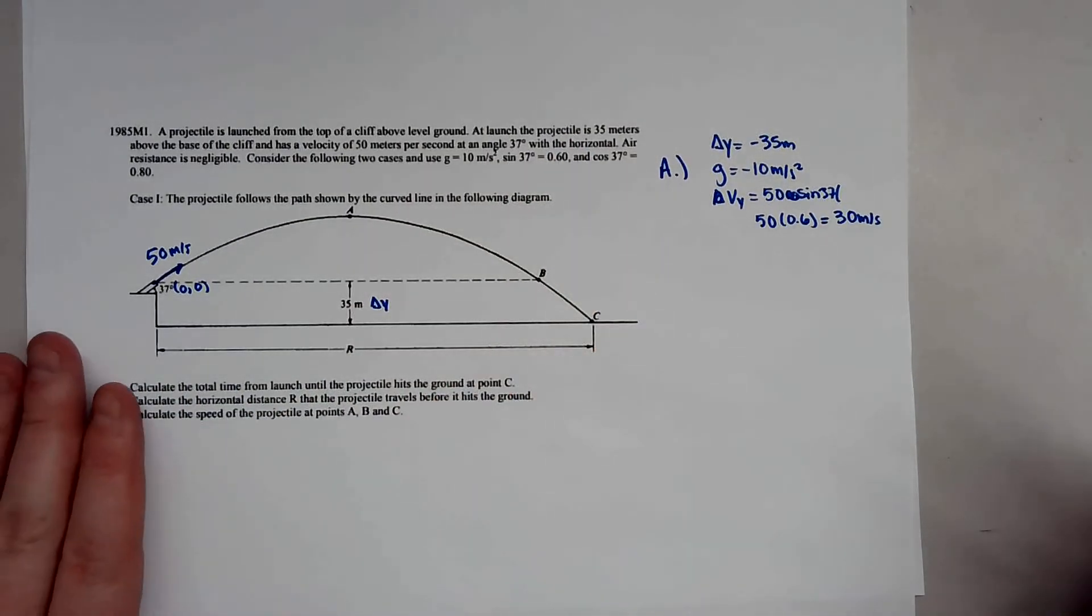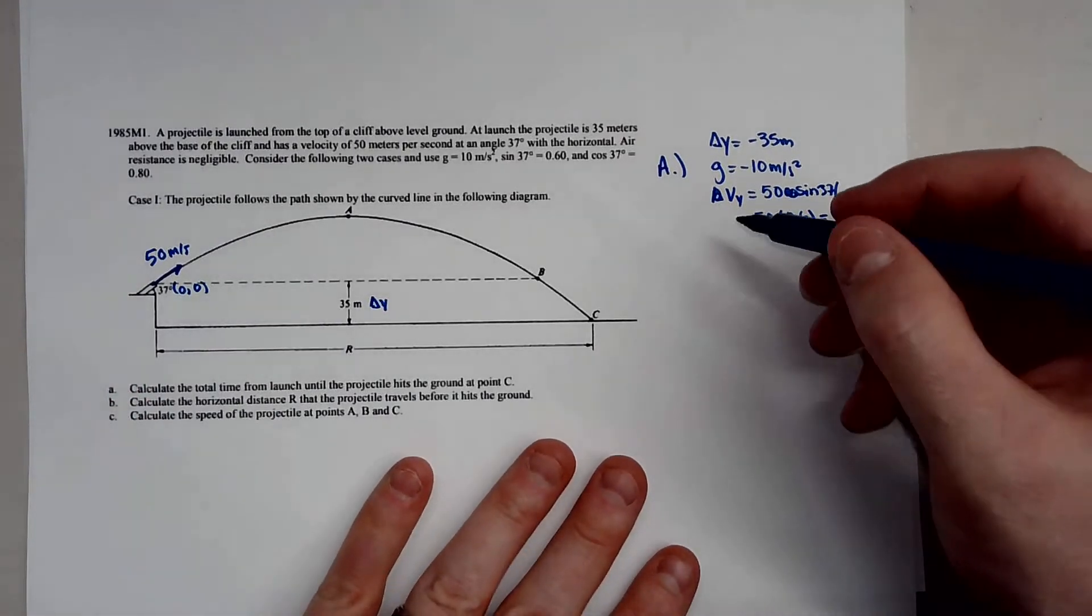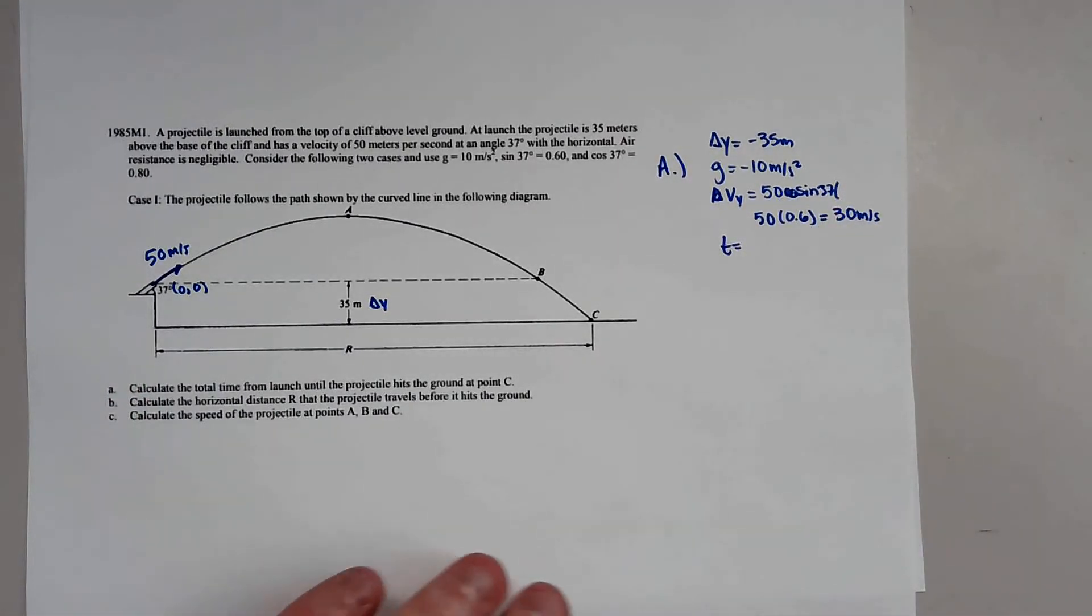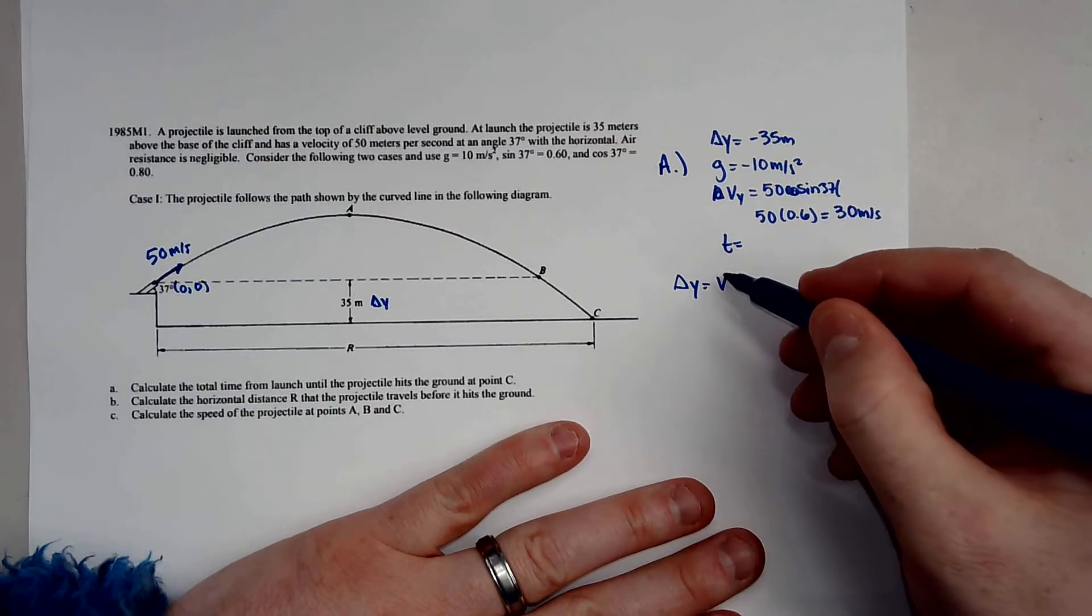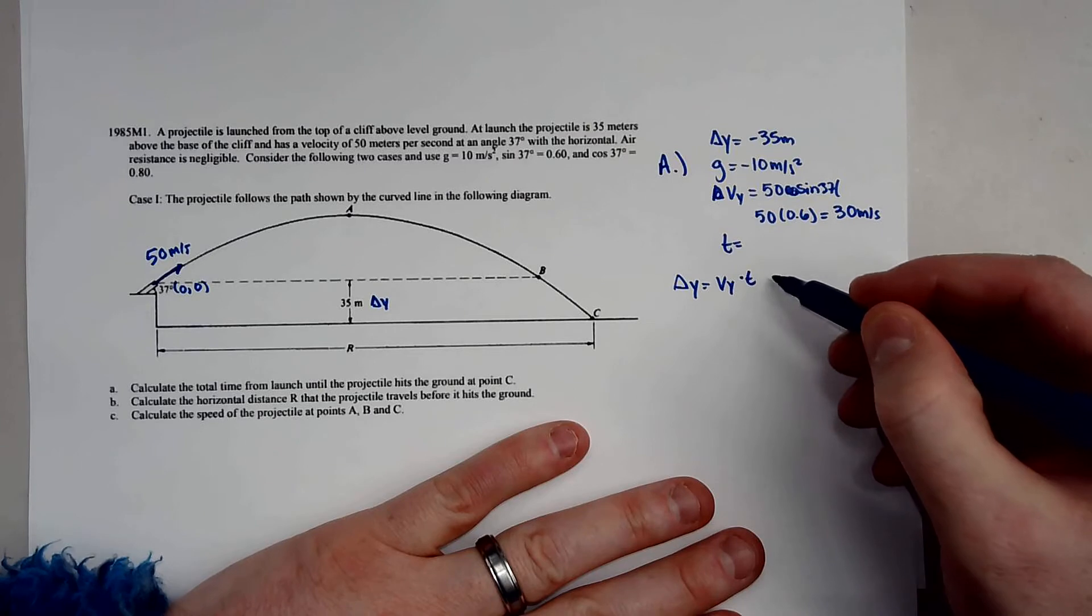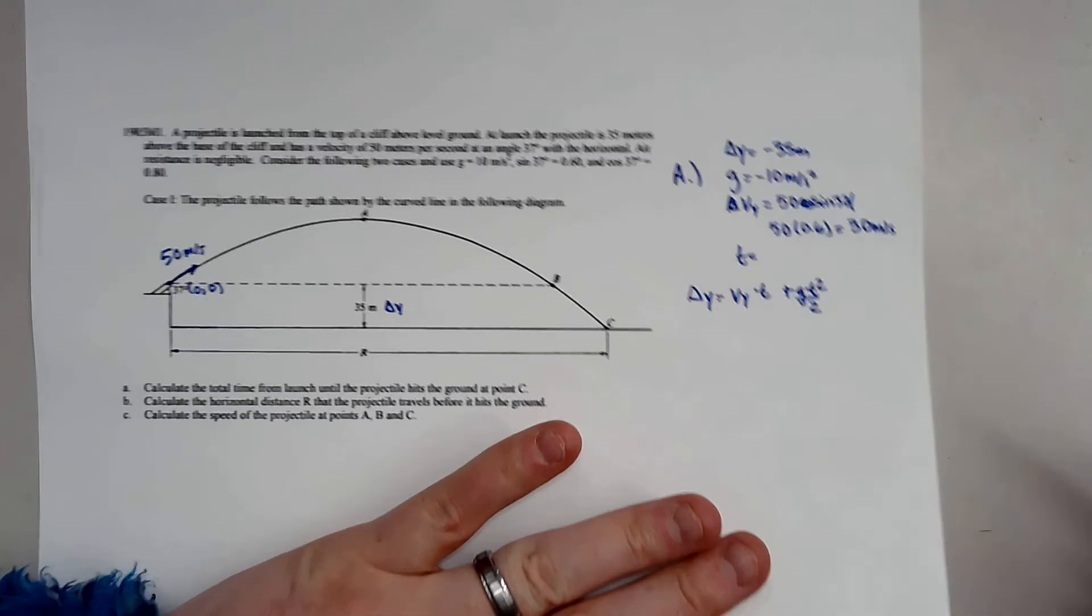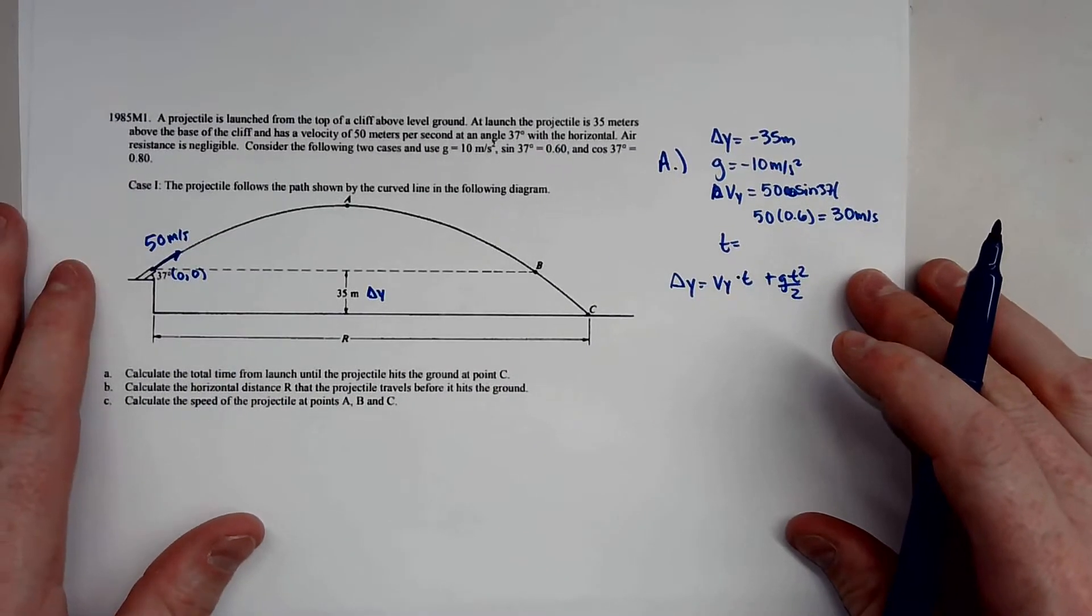And we are looking for time. So we notice a kinematic equation we can use is delta Y equals V naught Y times T plus G T squared all over 2. So that is the second kinematic equation.